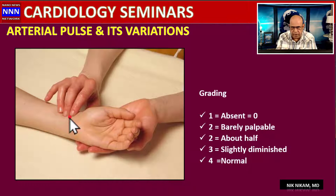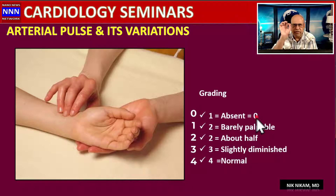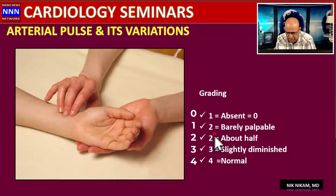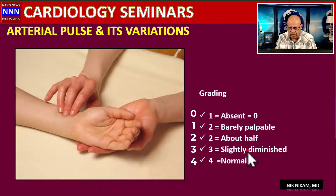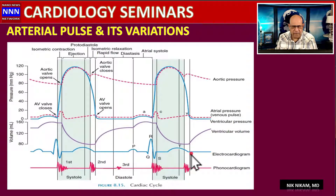Depending on how good the pulse is, you describe it as weak, thready, or bounding. You can grade pulses: zero is absent, as in cardiac arrest; one is barely palpable, such as during CPR when you feel a slight twitch at the femoral or carotid; two is slightly diminished; and four is normal or bounding, corresponding to a good blood pressure.